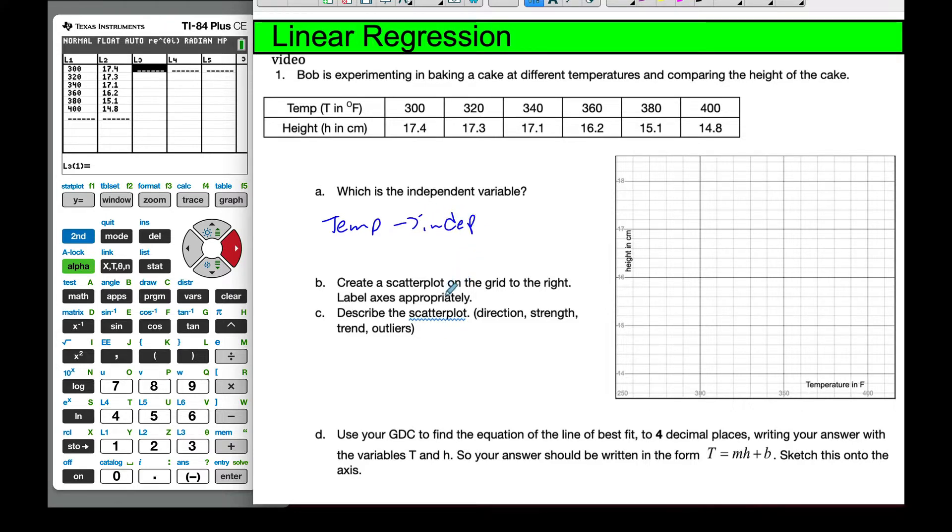And then it says, create a scatterplot on the grid to the right and label the axis of the coordinate. Well, I already see it have height, I have temperature, it's labeled. And so if I put these values on, if I do 317.4, so here, and 320, and 17.3, and so on. I'm going to get these values here, 340, and 17.1, so here, 316, and 16.2.